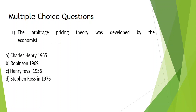Question 1: The Arbitrage Pricing Theory was developed by the economist ___. Options: A) Charles Henry 1965, B) Robinson 1969, C) Henry Fayol 1956, D) Stephen Ross in 1976. The answer is Option D: Stephen Ross in 1976.